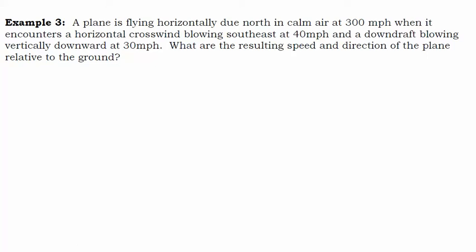In this video we want to look at an application of vectors in three dimensions. A plane is flying horizontally due north in calm air at 300 miles per hour when it encounters a horizontal crosswind blowing southeast at 40 miles per hour and a downdraft blowing vertically downward at 30 miles per hour. What are the resulting speed and direction of the plane relative to the ground?